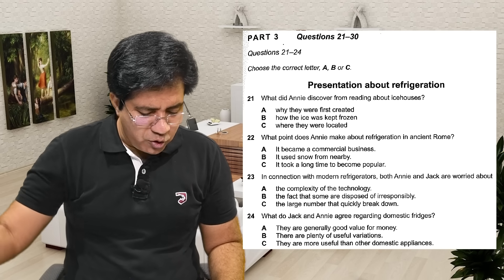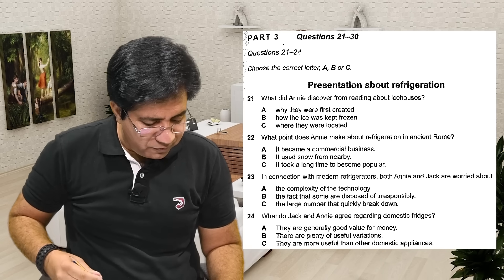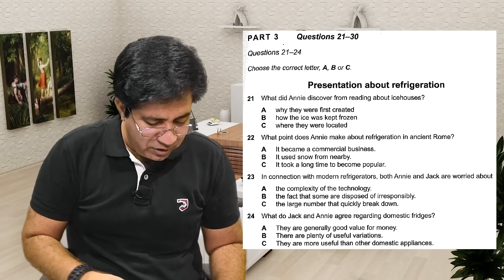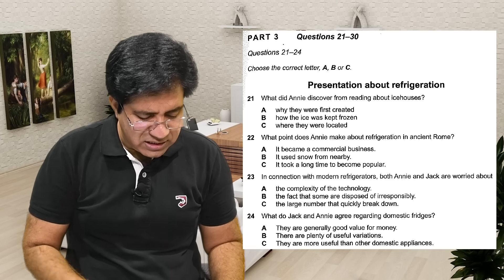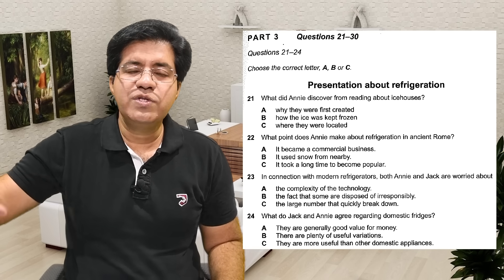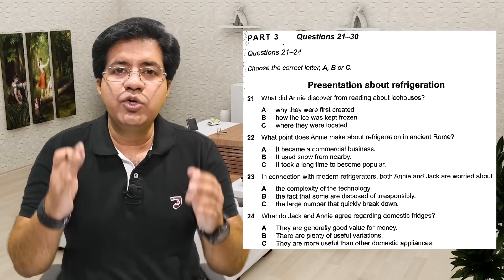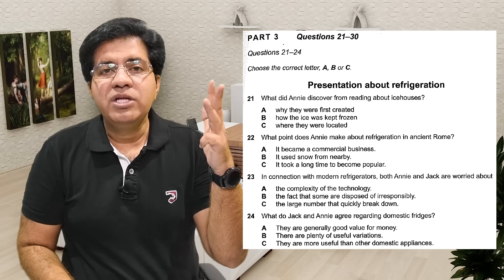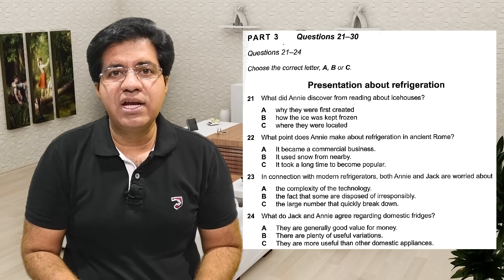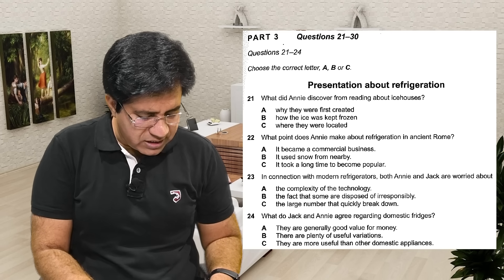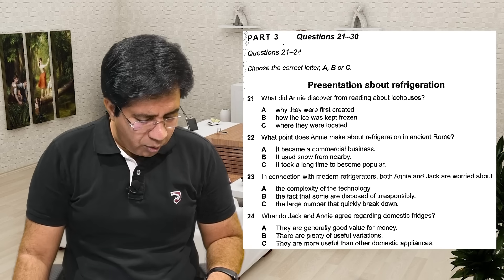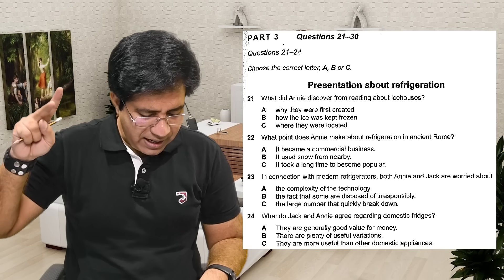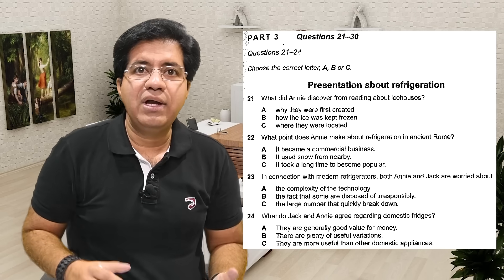Option A: 'They are generally good value for money' — 'domestic fridges good value for money,' encircle 'good value for money.' Option B: 'There are plenty of useful variations' — 'plenty of useful variations.' Option C: 'They are more useful than other domestic appliances' — 'useful' is an adjective, 'domestic' is an adjective, 'appliances' is a noun. Focus on nouns, verbs, and adjectives to make sense of the options.